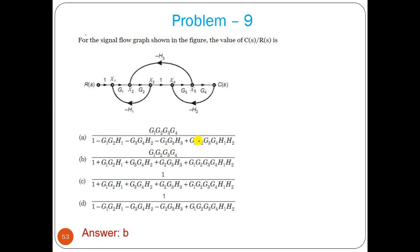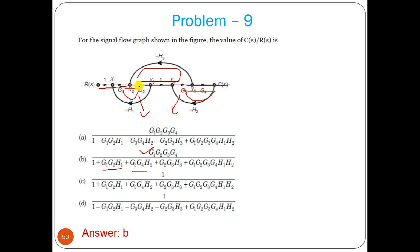Another problem: one forward path with gain g1*g2*g3*g4 and three loops with minus signs. The first and third loops are non-touching. Delta = 1 + g1g2*h1 + g3g4*h2 + g2g3*h3 + (g1g2*h1)*(g3g4*h2). Answer = g1*g2*g3*g4 / [1 + g1g2h1 + g3g4h2 + g2g3h3 + g1g2g3g4h1h2].